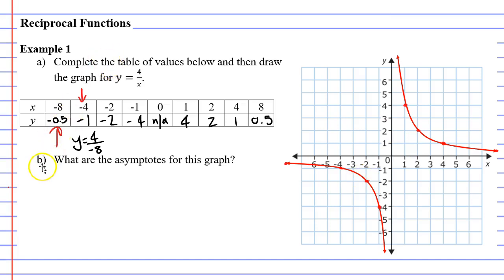Let's move on to question b, which says: what are the asymptotes for this graph? I'll do this in blue. We can see that the asymptotes fall on the y and x axis again. This doesn't always happen — there will be cases where they don't fall on the x and y axis, and we'll be talking more about that in the next video.